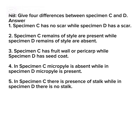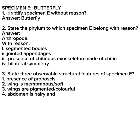Specimen E is a butterfly. Question one: identify Specimen E without reason — answer, butterfly. Question two: state the phylum to which Specimen E belongs with reason. Answer: Arthropoda. Reasons: segmented bodies; jointed appendages; presence of chitinous exoskeleton made of chitin; bilaterally symmetrical.